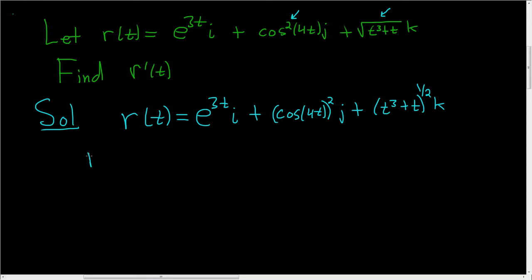Now we're ready to take the derivative, so r prime of t. The derivative of e to the t is e to the t, so this is e to the 3t, times the derivative of the inside function via the chain rule, so 3.